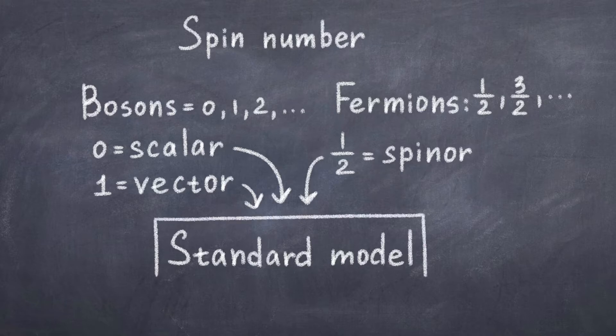These spin numbers are important in understanding how the standard model is organized. And we will see that fermions are what make up matter and bosons make up the forces and the fundamental mass of particles.